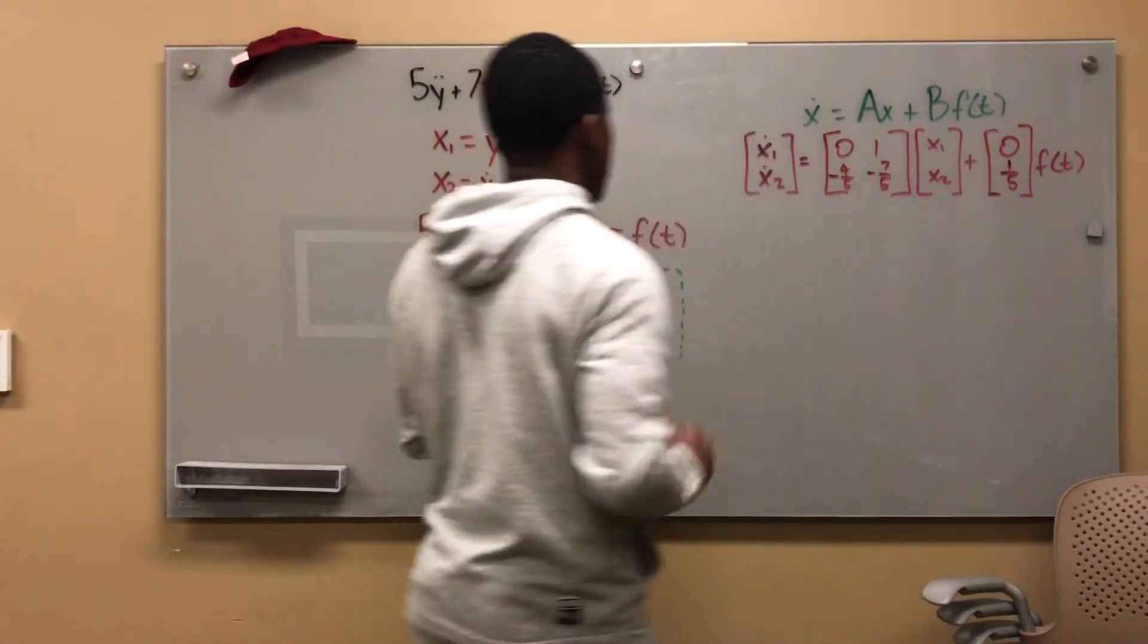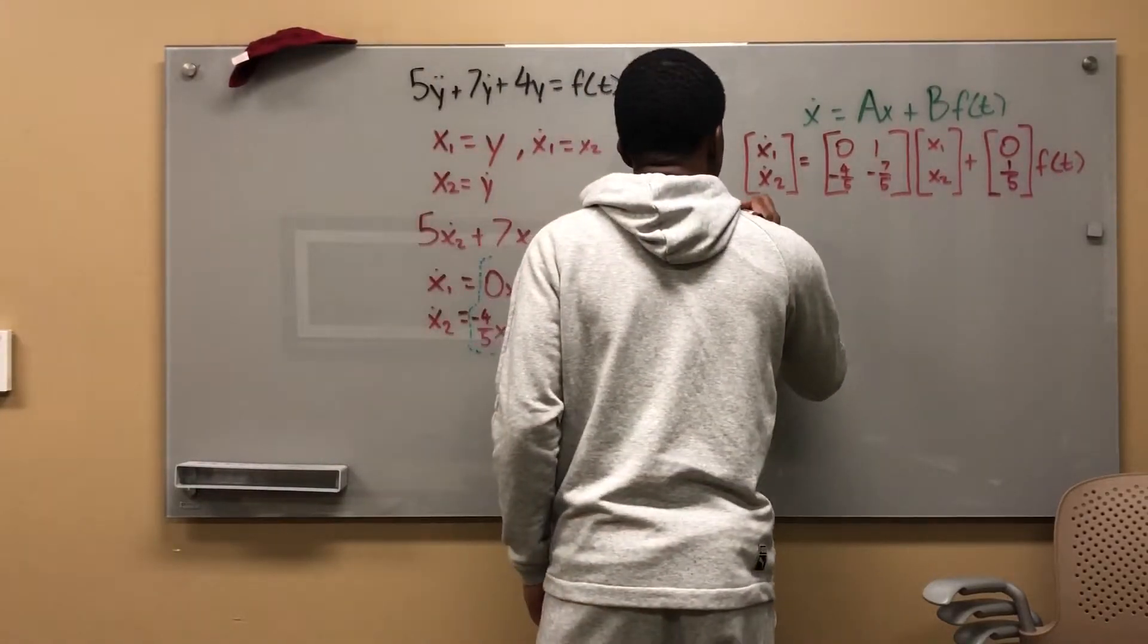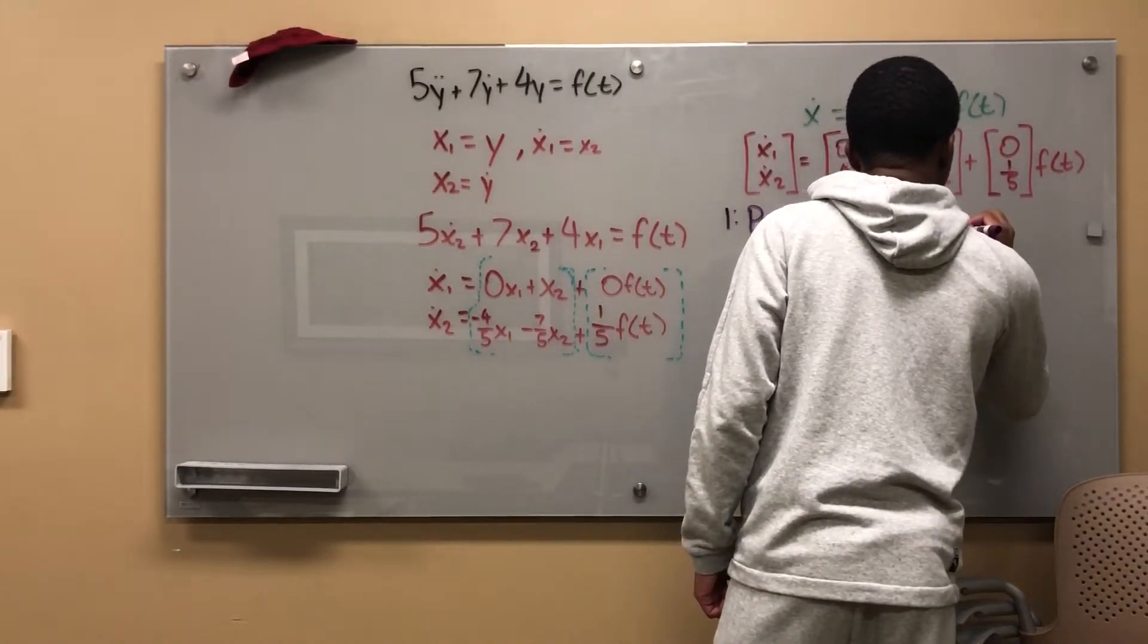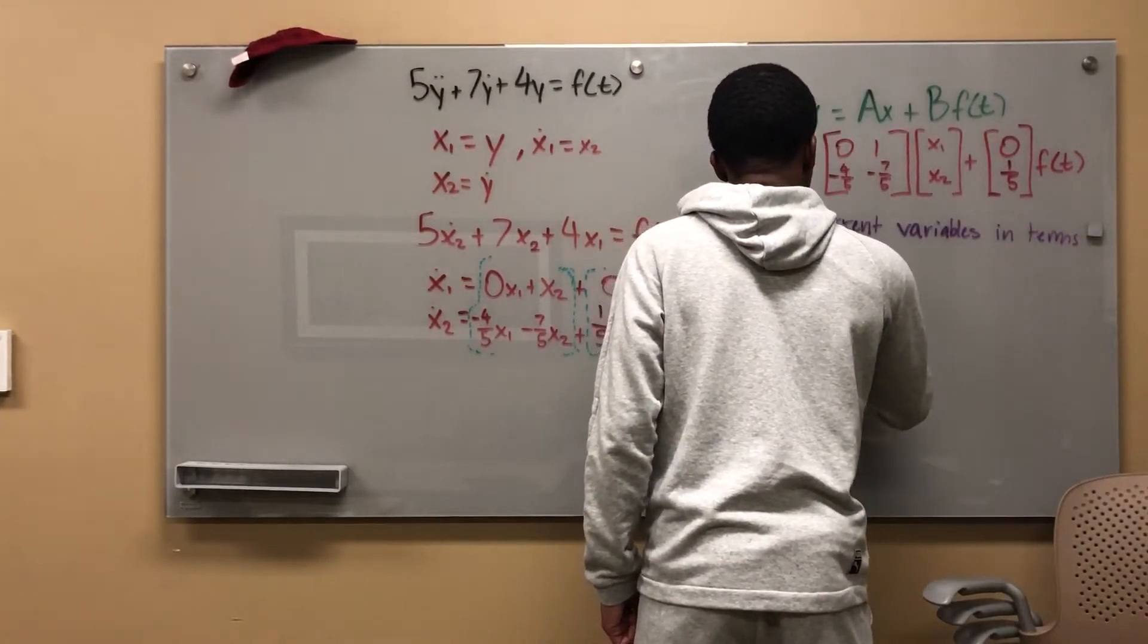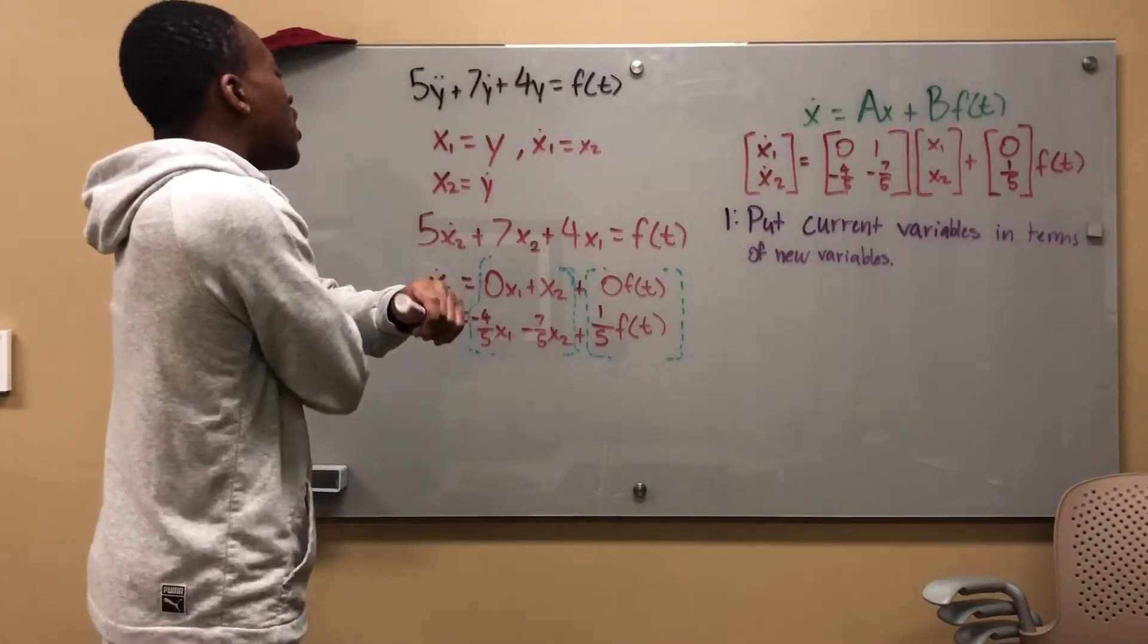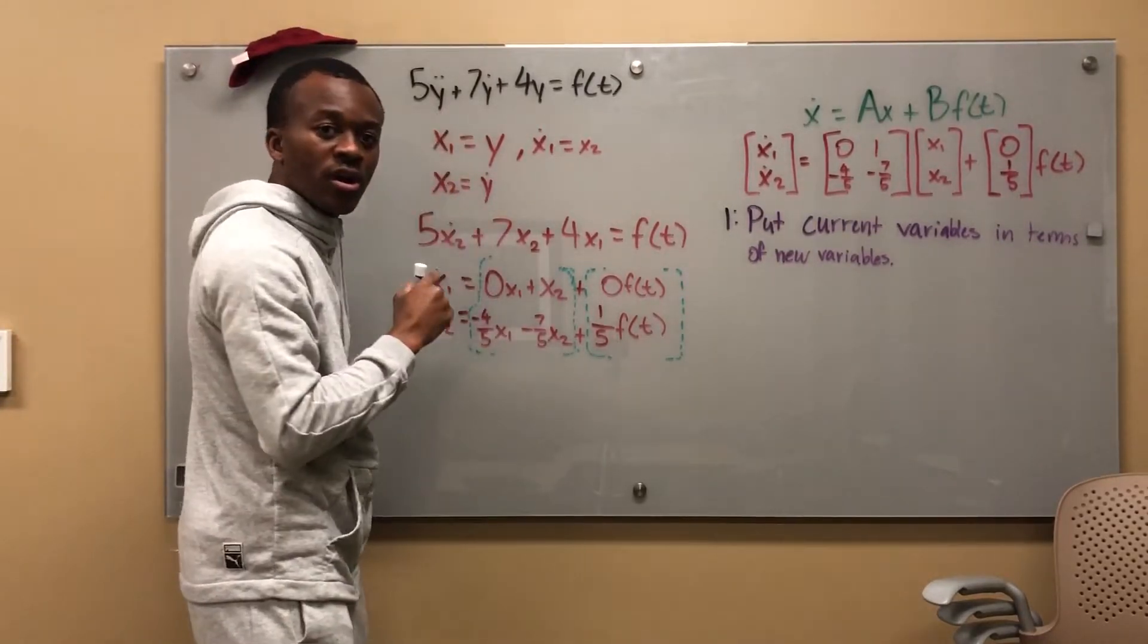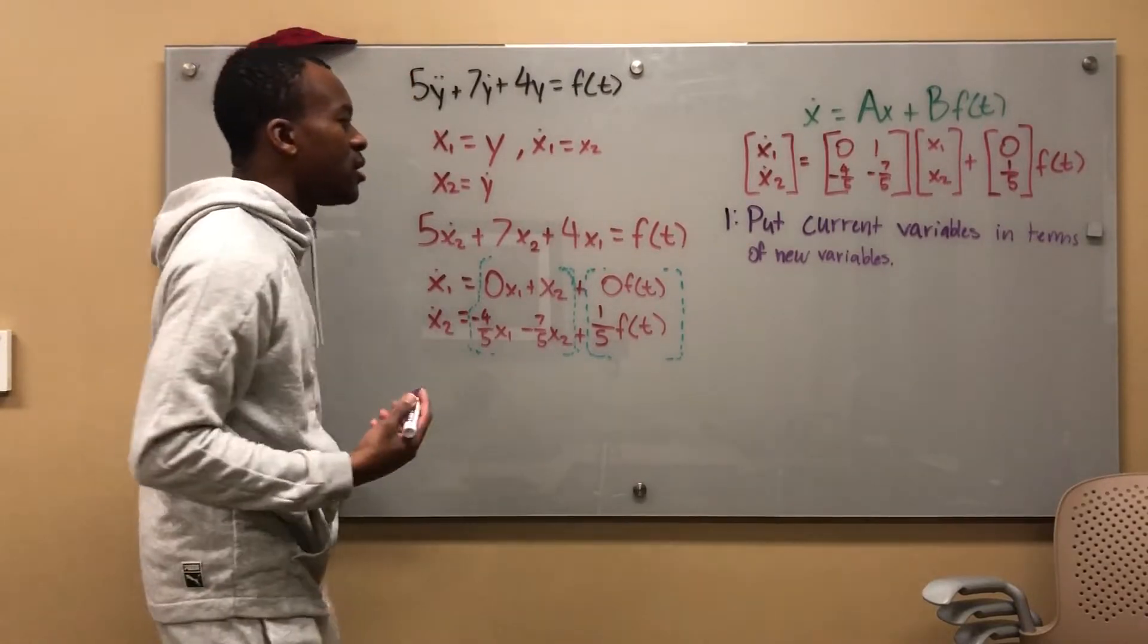So this is what we have for our state variable form. If I had to list a set of steps, I would say: Step 1, put current variables in terms of new variables. That's what we did here. I wanted to be able to sum up x_1 dot and x_2 dot. That's why I stopped here. x_2, if I took a time derivative of this, would take care of the highest order of my y variables.